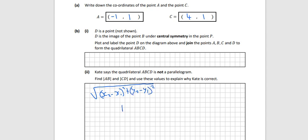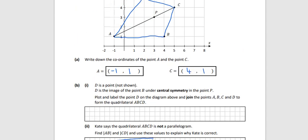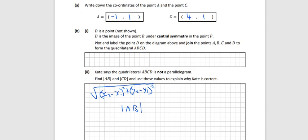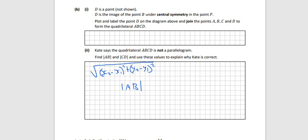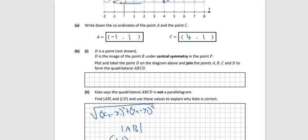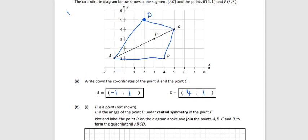I'll show the distance from A to B first. Point A is (-1, 1), and point B is (4, 1).